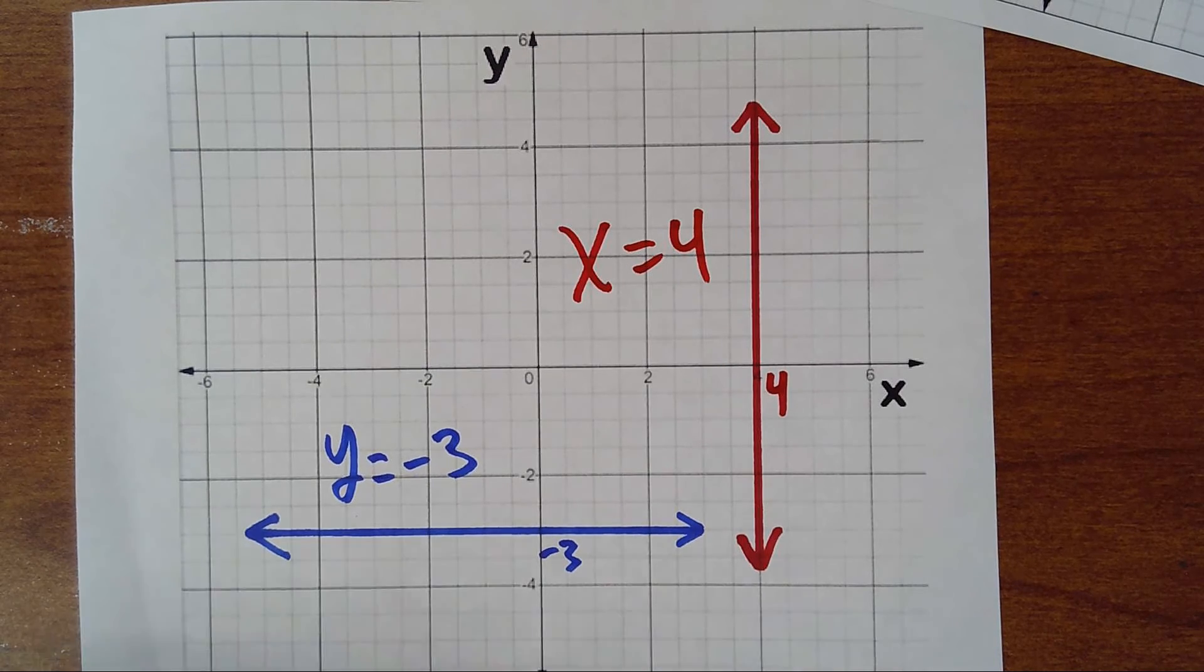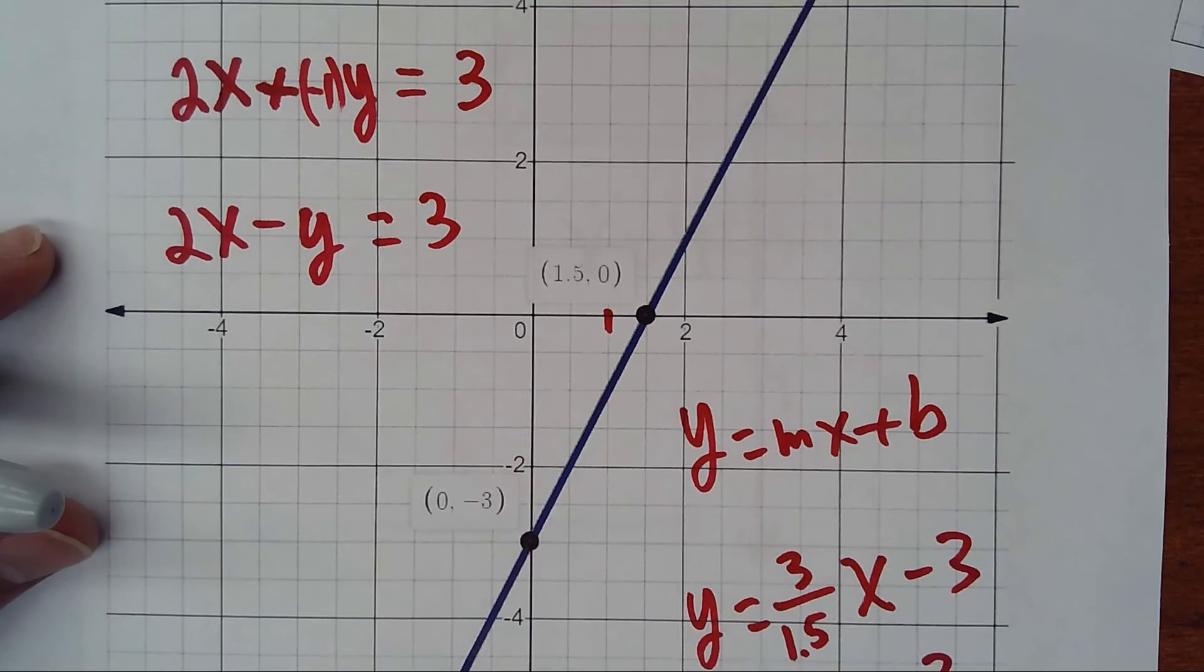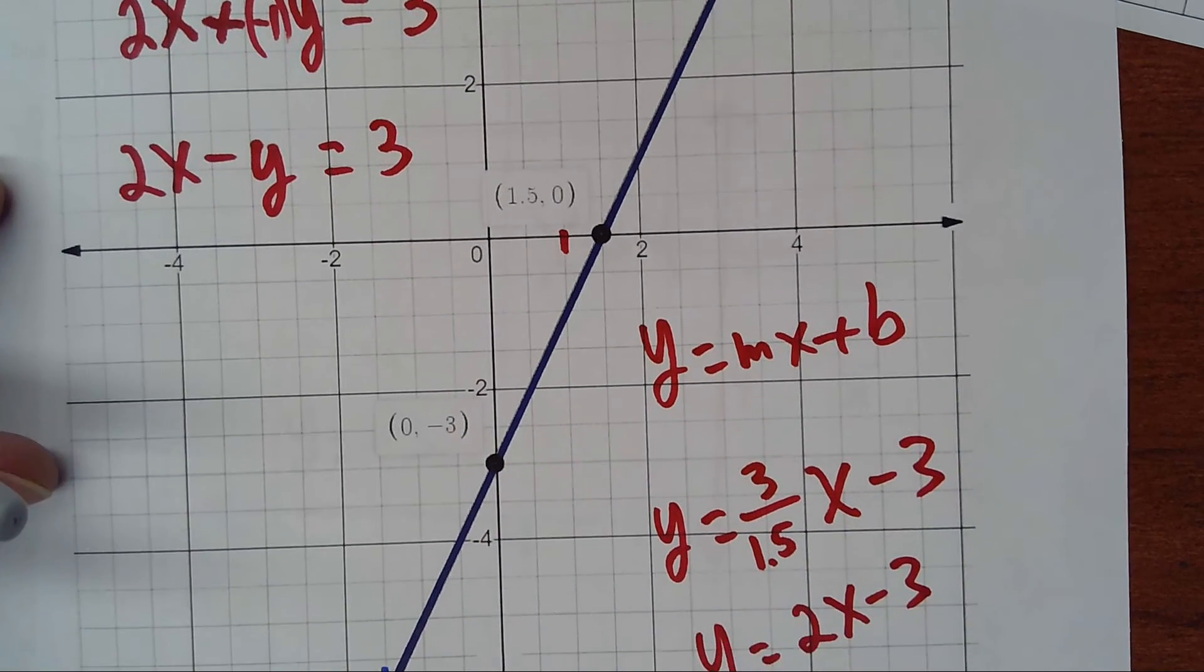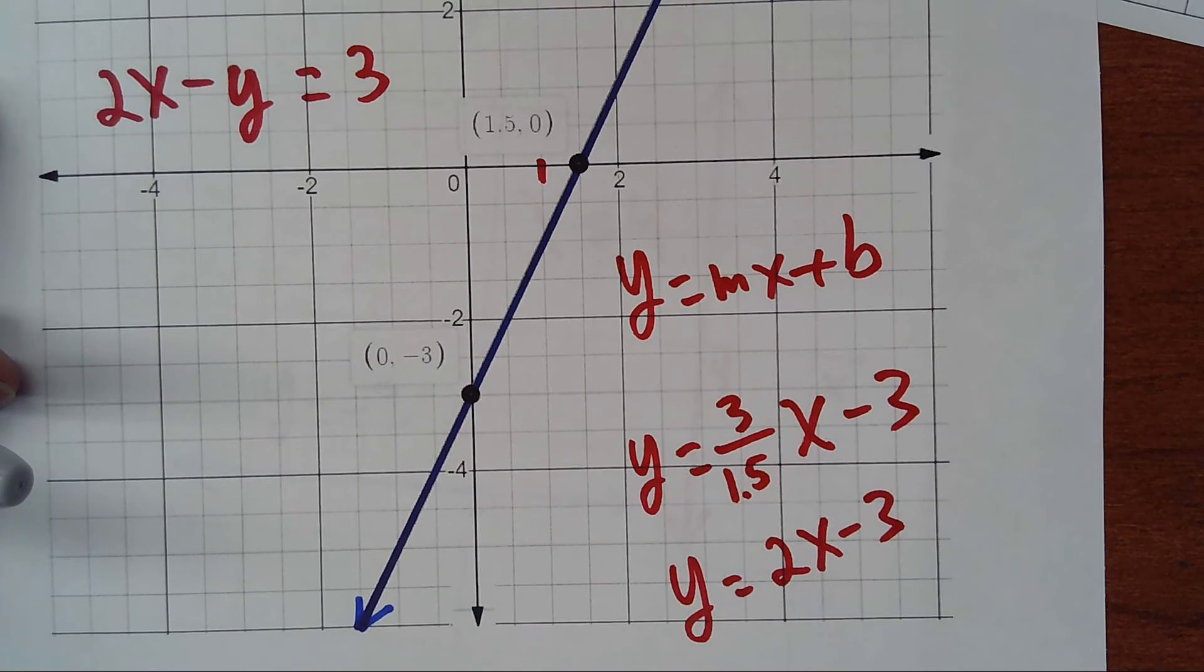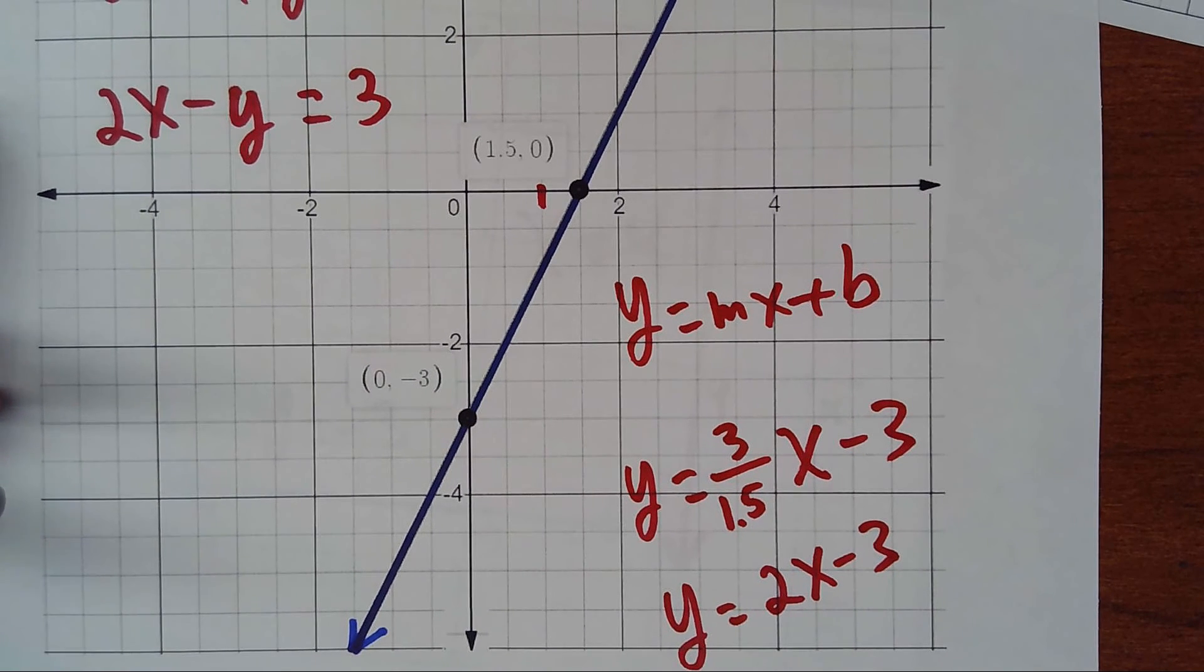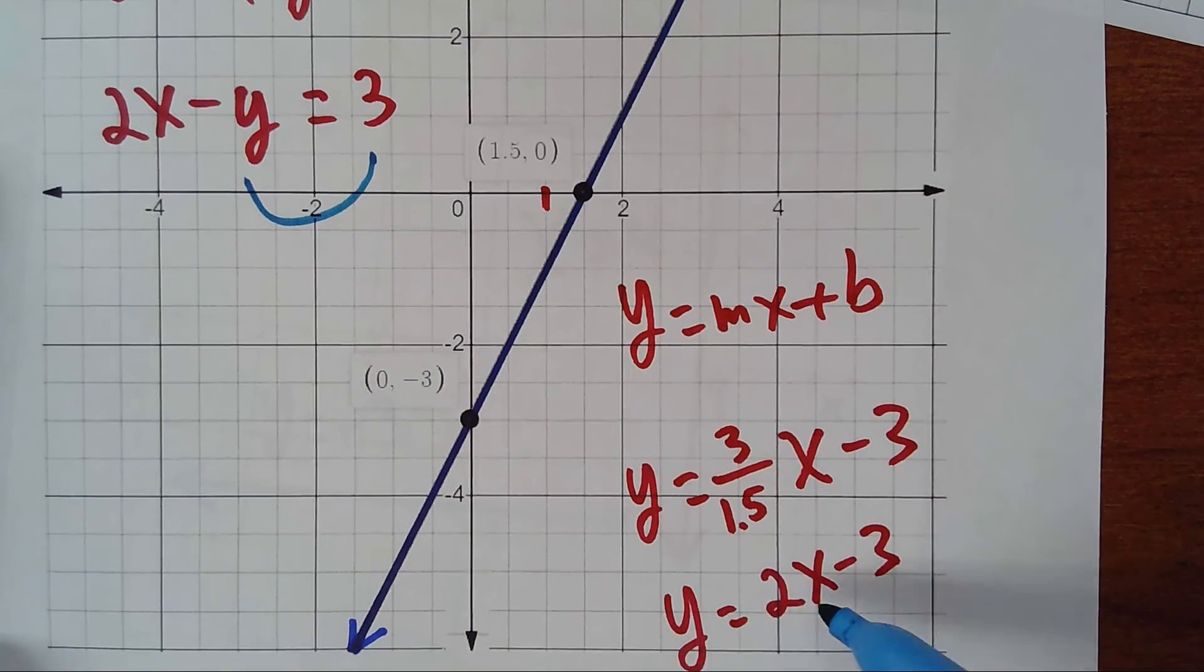So x equals 4 vertical line, y equals -3 horizontal line. Thanks for watching. You can check the process again that I did here. I did it slow, so take your time to understand. You see that we got the same equation, y = 2x - 3 and 2x - y = 3.